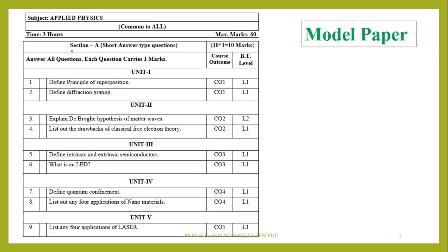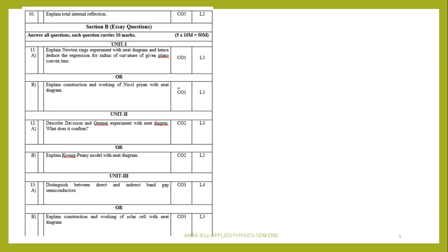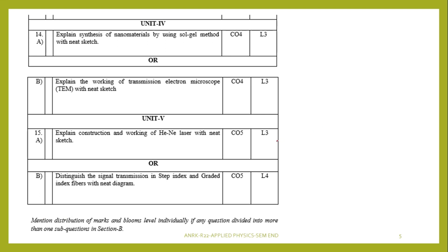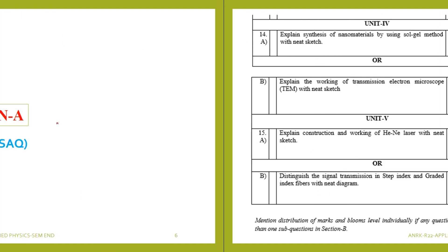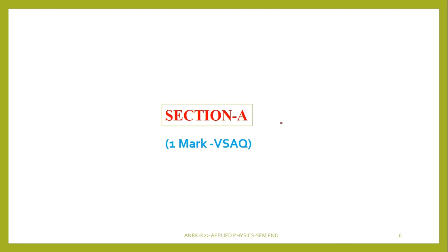Now come to the model paper. Section A consists of short answer type questions. Unit 1 we get two questions, Unit 2 two questions, Unit 3 two questions, Unit 4 two questions, Unit 5 two questions. These are very short answer and one mark only, so we have to write answers carefully. Then Section B — these are 10-mark questions. Here also questions 11 to 15 will have A or B options and we have to answer any one from A or B.